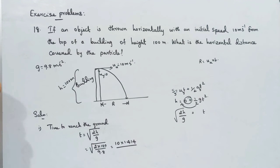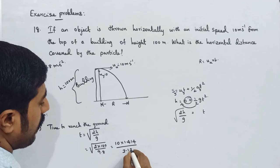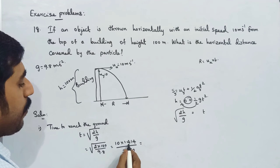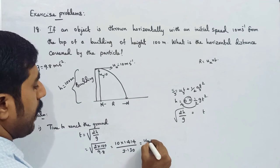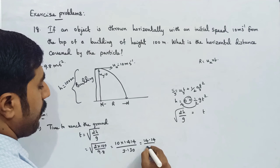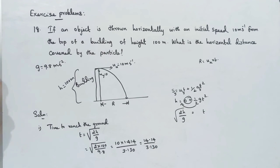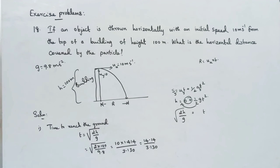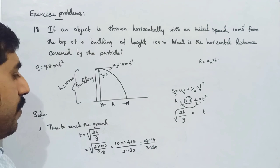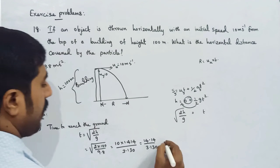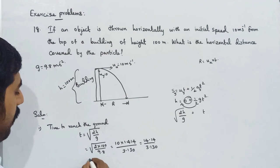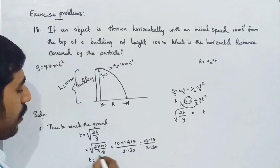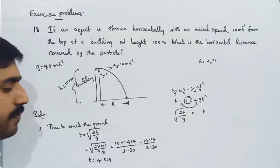So t = √(2 × 100 / 10) = √20 = 4.514 seconds. Dividing by the same value gives approximately 4.514 seconds.